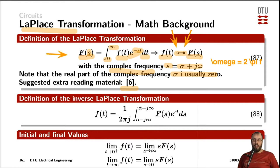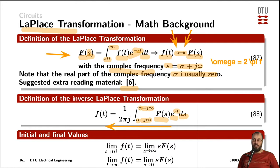Using this integral helps us get from the time domain to the frequency domain. The inverse Laplace transformation helps us go the other way: if we have a function in the frequency domain we can apply the inverse Laplace transformation to go back into the time domain. Here we multiply the function in the frequency domain with e raised to the complex frequency times time t, and integrate over the complex frequency ds, where the integral goes from minus j*infinity to plus j*infinity, and alpha is the real part of the frequency, typically zero. Finally, we divide by 2 times pi times the imaginary number.